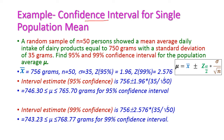Now let us see one problem on confidence interval for a single population mean. A random sample of n equal to 50 persons showed a mean average daily intake of dairy products equal to 750 grams with a standard deviation of 35 grams. From this we need to find the 95 percent and 99 percent confidence interval for the population average mu.